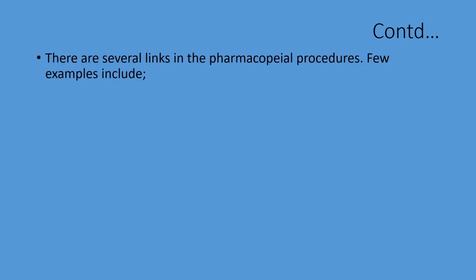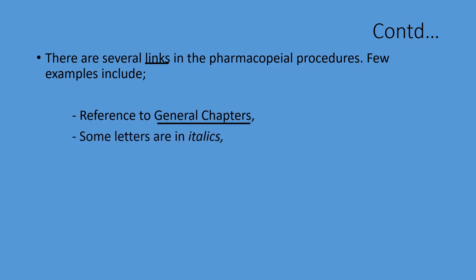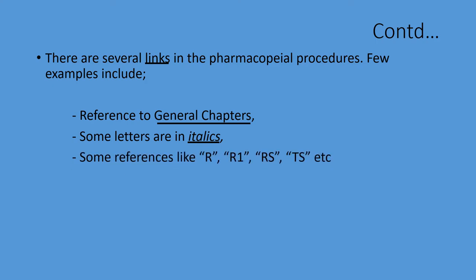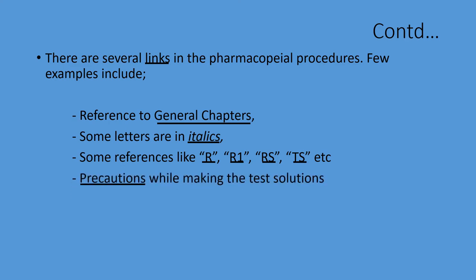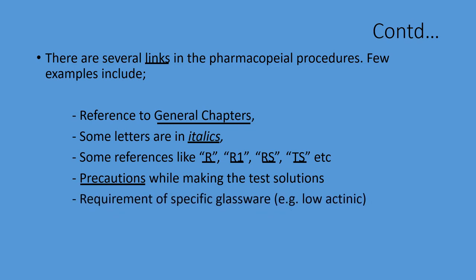There are several missing links in the pharmacopoeia procedures. A few examples include: references to general chapters, some letters in italics, and some references like R, R1, RS, TS, etc. There are also precautions while making the test solutions, requirements of specific glassware — for example, low actinic.